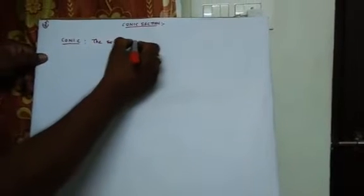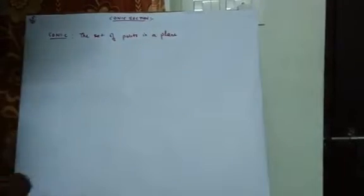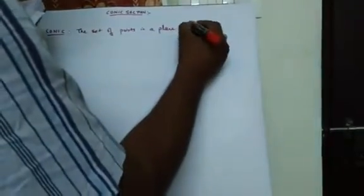First of all we should know what is meant by conic section. In first year we learned conic section with formulas, but here we will see all the formulas with respect to constant ratio. A conic is the set of points in a plane whose distances from a fixed point called focus...